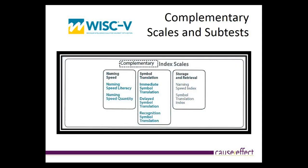The WISC also provides ancillary index scales including quantitative reasoning and auditory working memory. The digit span backward requires translation in memory to a backwards sequence, while letter-number sequencing focuses on cognitive set shifting — the ability to efficiently shift between cognitive sets. Set shifting is one of the problems found in children with language disorders. The WISC-V complementary scales include naming speed related to literacy, naming speed quantity for retrieval from memory, and symbol translation related to the visual domain. The naming speed index is extremely important for speech-language pathologists, and if there are literacy questions, the symbol translation index is another important measure.